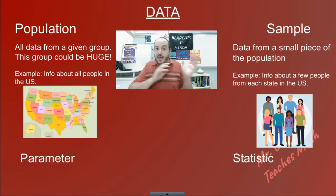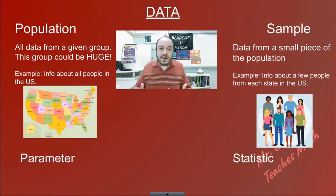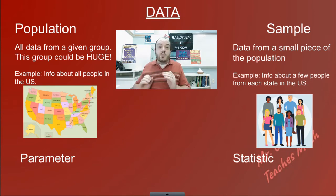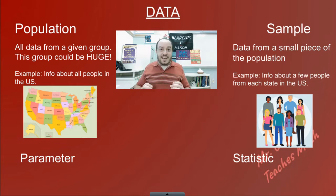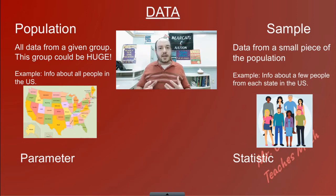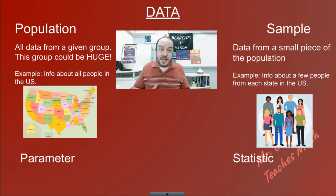When we separate sample and population, we give specific names to the numbers we pull from them. If the number comes from the sample, we call it a statistic. If the number comes from the population, we call it a parameter. When you see the words statistic and parameter, they're telling you whether a number was collected from a whole population or from a sample.